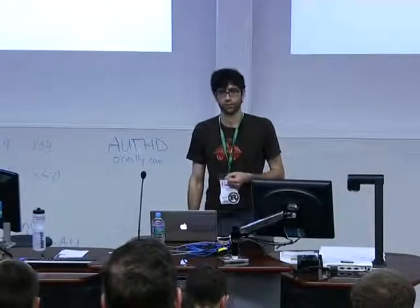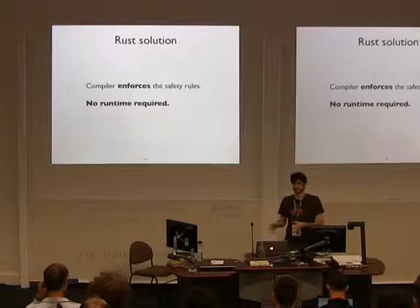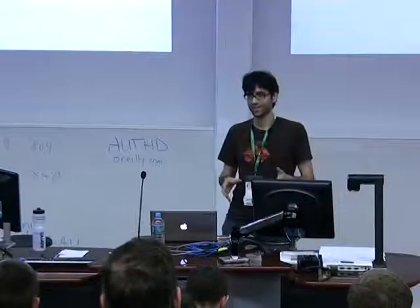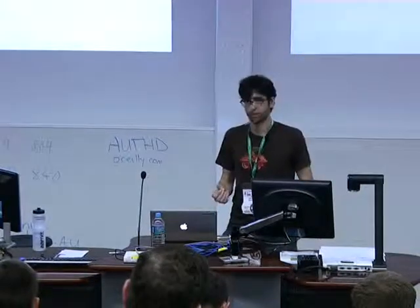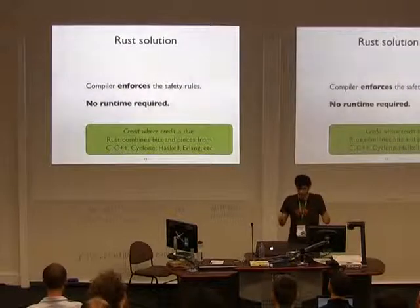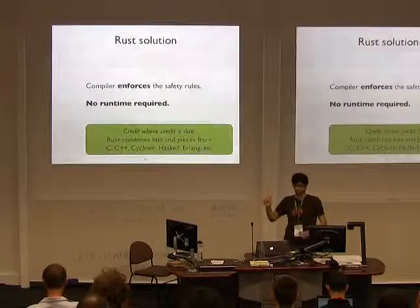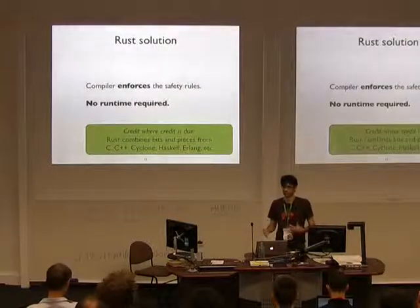So what we've done in Rust is take a different approach. Essentially, we take those same C++ safety rules that you were supposed to be enforcing but weren't necessarily doing, and have the compiler enforce those safety rules for you. The compiler is going to be pretty rigorous about it — basically coming up with a set of conventions that guarantee you're following all the rules you're supposed to follow. The advantage is you don't need a runtime because you're not making the mistakes the runtime was supposed to catch. The biggest influences are probably C, C++, Haskell, Erlang, and Cyclone.